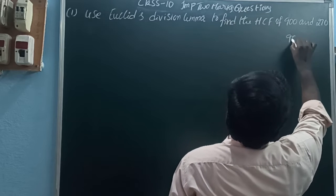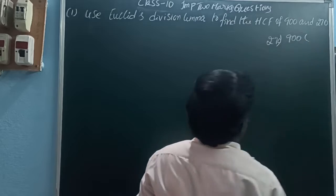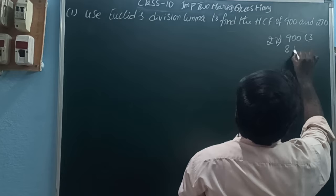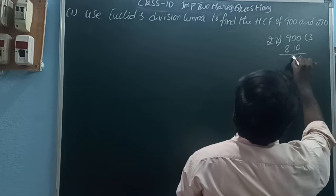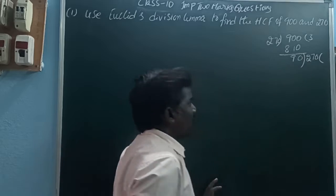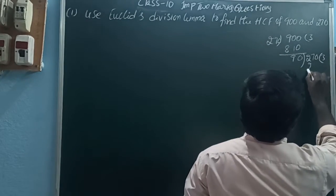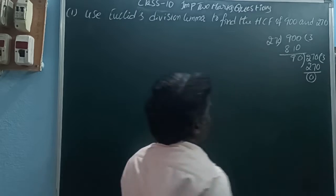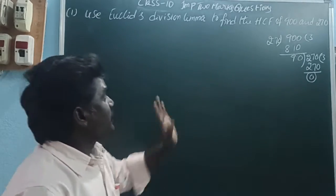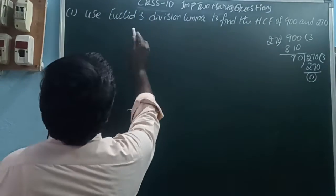The largest number is 900, smallest number is 270. So 900 divided by 270 gives 270 times 3 equals 810, remainder 90. Next, 270 is divided by the divisor 90, how many times? Three times, that is 270, remainder is 0. So here, the highest common factor is 90.